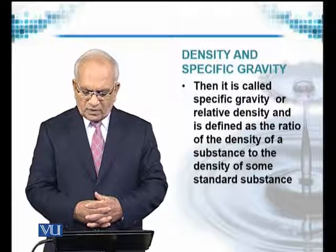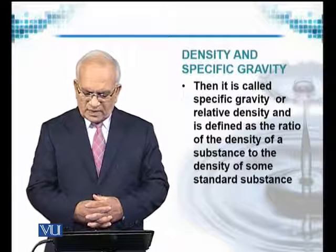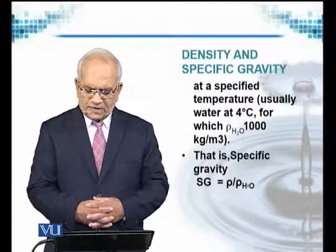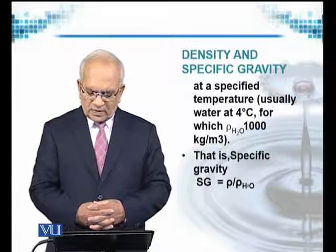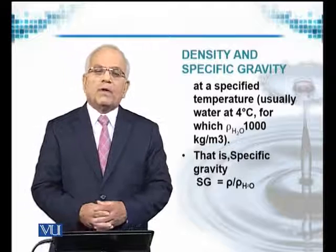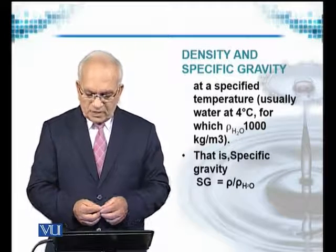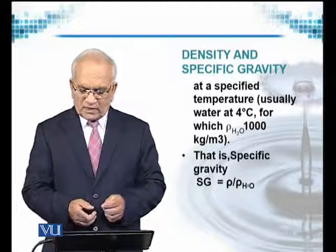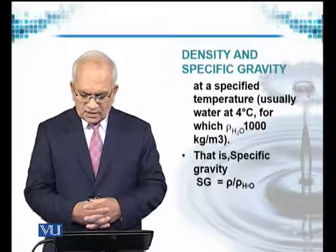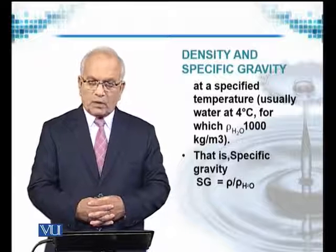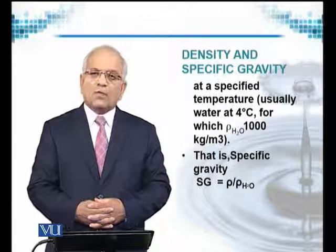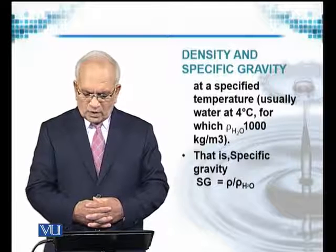Specific gravity, also called relative density, is defined as the ratio of the density of a substance to the density of some standard substance at a specified temperature. For water at 4 degrees centigrade, the density — rho of H₂O — is 1000 kg/m³, which is considered the representative density of water. Specific gravity is correspondingly defined as rho over rho of water.